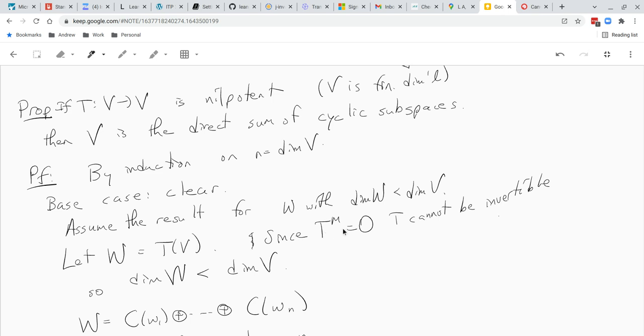Now since T to the M is zero for some M, T cannot be invertible. If it was then we multiply both sides by T to the minus M, we'd have the identity equals zero, that's impossible. So T is not invertible, that means its null space is non-trivial, that means the dimension of the range is strictly less than the dimension of V.